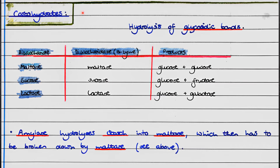Carbohydrate digestion involves the hydrolysis of glycosidic bonds. Disaccharides such as maltose, sucrose, and lactose are hydrolyzed by disaccharidase enzymes to give the monosaccharides that make up each disaccharide. It's easy to remember the name of the enzyme catalyzing each reaction — just change the ending of the disaccharide name to '-ase'. So maltose hydrolysis is catalyzed by maltase.